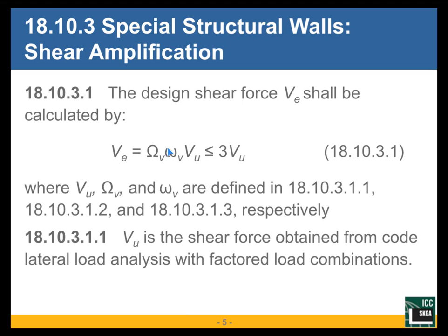The product of the two — capital Omega-sub-V and lowercase omega-sub-V — need not exceed three. So we will now be required to design special shear walls for up to three times the shear that we were designing them for under ACI 318-14.